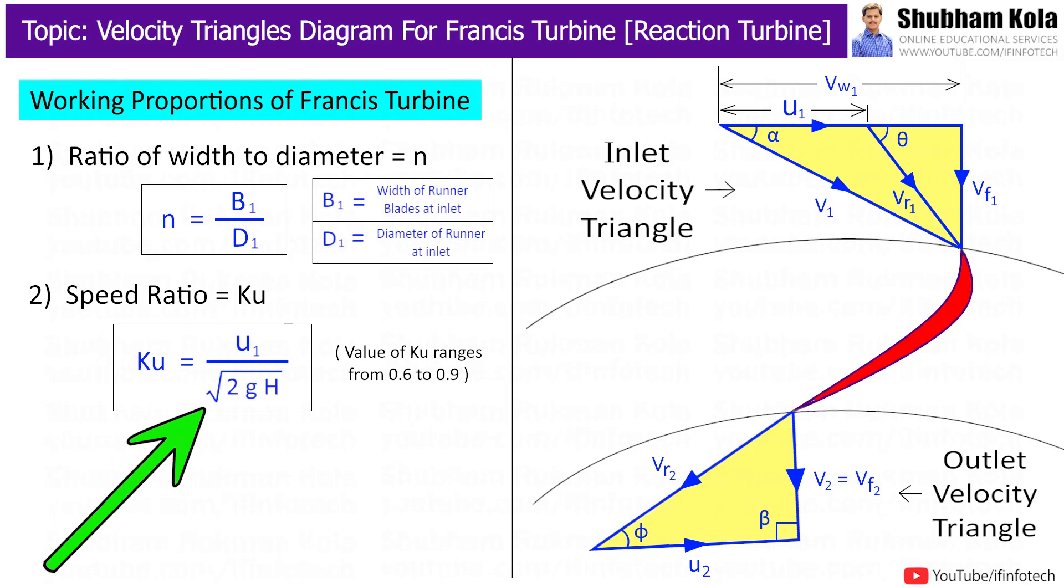The speed ratio is the ratio of tangential velocity at inlet to the theoretical jet velocity called as spouting velocity i.e. square root of 2gH. And the value of speed ratio ranges from 0.6 to 0.9.